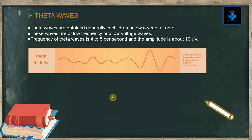Theta waves are obtained generally in children below 5 years of age. These waves are of low frequency and low voltage. The frequency of theta waves is 4 to 8 per second and the amplitude is about 10 microvolts.